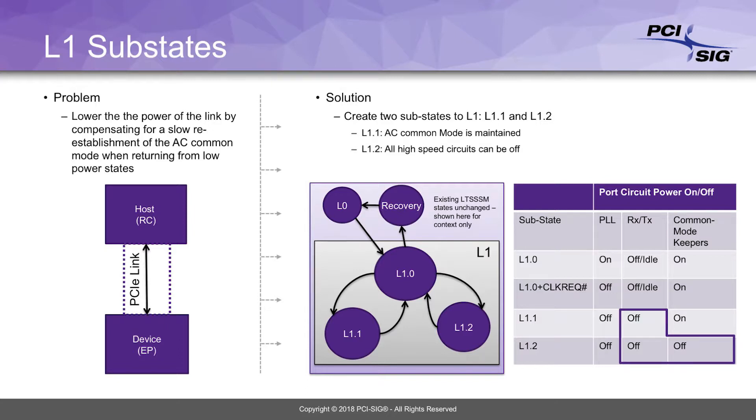Even with L0s, L1, and L2, we found that the trade-offs between fully off and always on — and the granularity we defined with L1 and L2 — were still not enough. So what PCI-SIG did with all its members is define what we call L1 substates. It's taking the L1 state and adding a clock ref signal input to use as the command to turn things on and off. Now we've defined the granularity even further, such that you can turn off the PLLs and other aspects within the L1 substates.